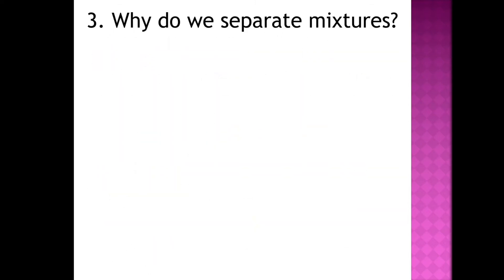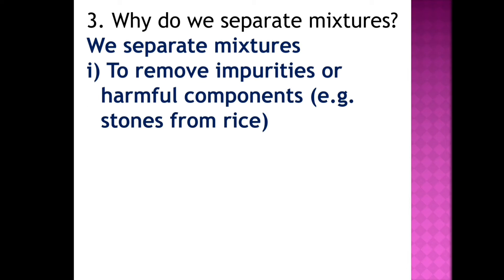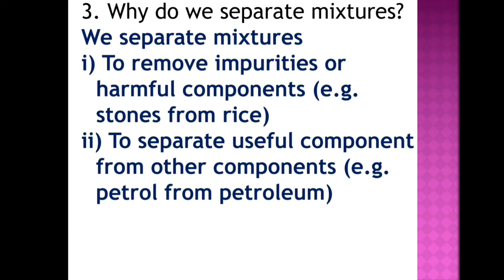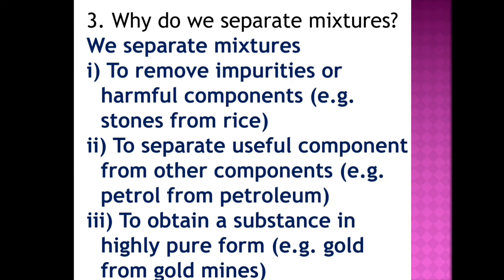Third question: why do we separate mixtures? We have three points. First, to remove impurities or harmful components — example: stones from rice. Second, to separate a useful component from other components — example: petrol from petroleum. Third, to obtain a substance in a highly pure form — example: gold from gold mines.